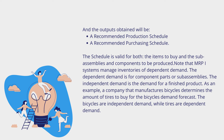MRP-1 systems manage inventories of dependent demand. The dependent demand is for component parts or sub-assemblies, while the independent demand is the demand for a finished product. As an example, a company that manufactures bicycles determines the amount of tires to buy for the bicycle demand forecast. The bicycles are independent demand, while tires are dependent demand.